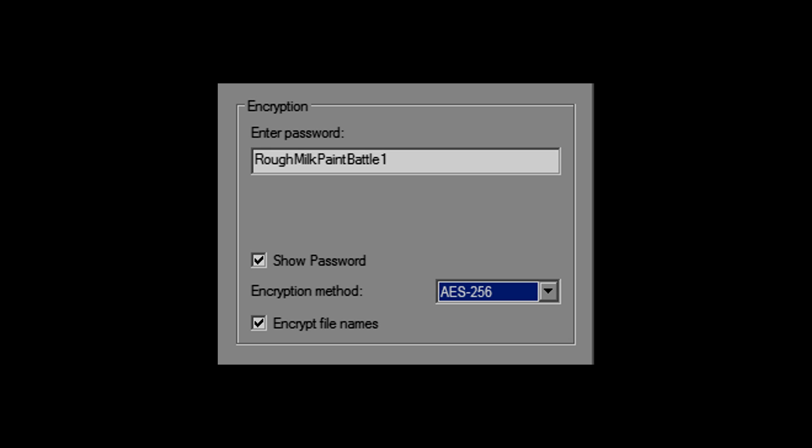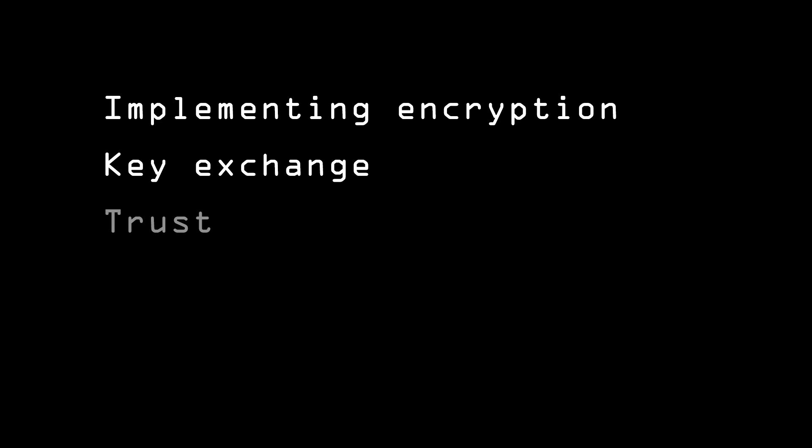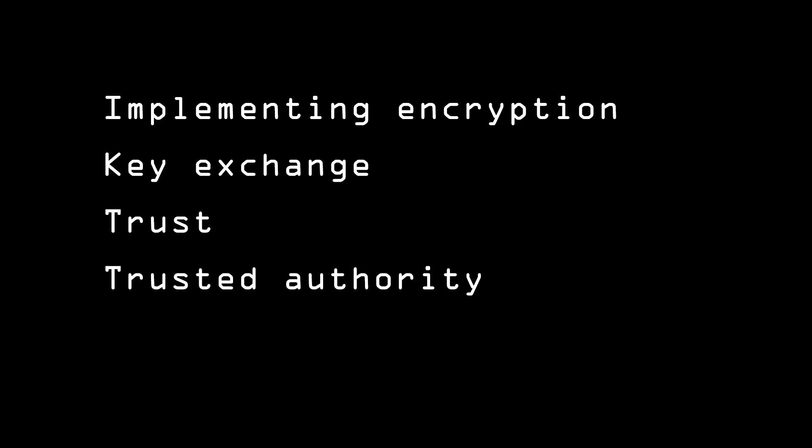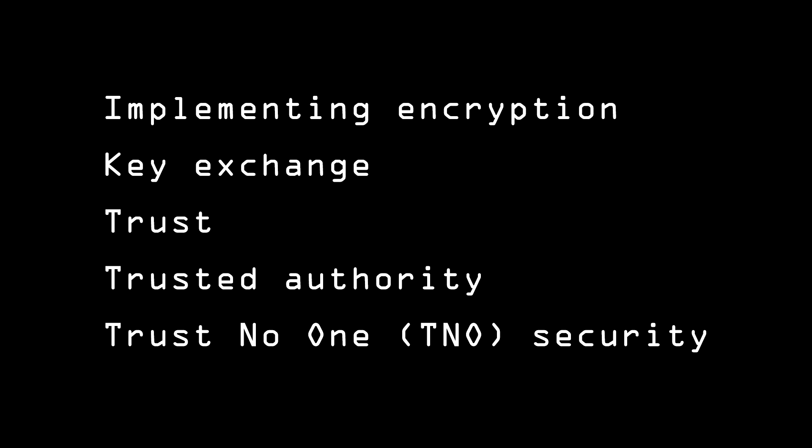So in this video, we've covered ways of implementing the encryption methods we talked about in earlier videos. We talked about a key exchange between individuals who trust each other. We talked about verifying a key with a trusted authority. And we talked about Trust No One security, where only one person has and needs the encryption key. In the next video, we'll complete part one by looking at issues that arise with those all-important random numbers.